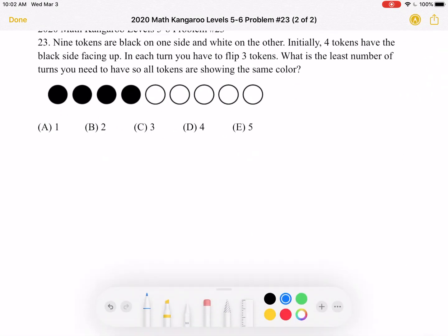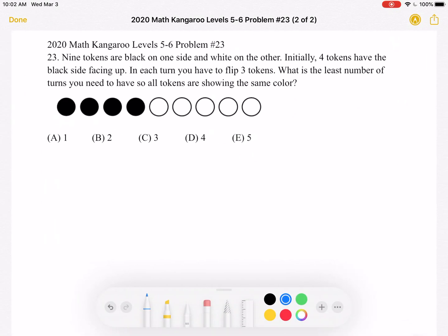And here is where we'll be doing the solution. So let's start by having the original setup as given in the problem. We have four tokens where the black side is facing up and five tokens where the white side is facing up.